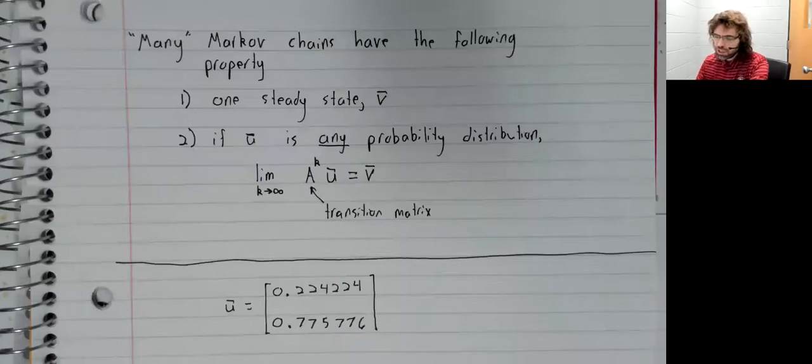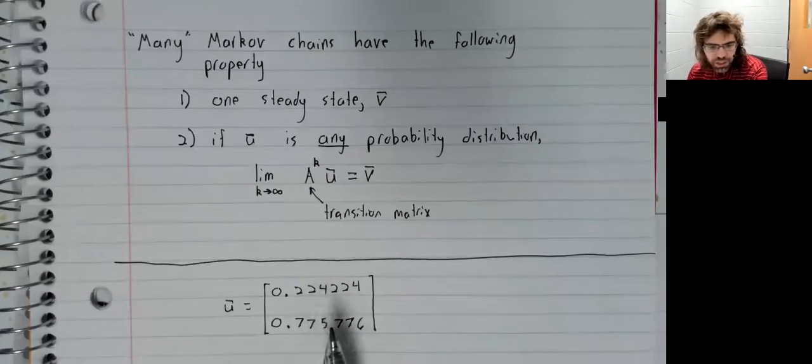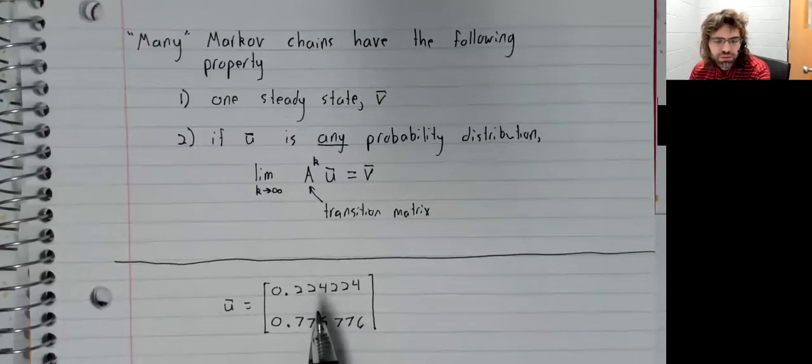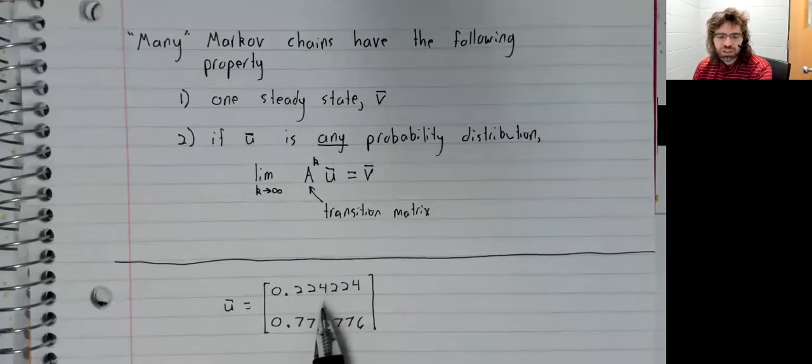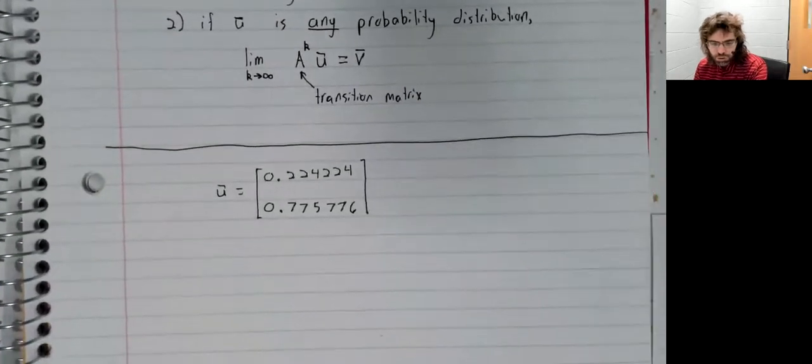So here will be an initial probability distribution. And this was generated totally at random using a random number generator. So this vector doesn't have any special or any nice properties.